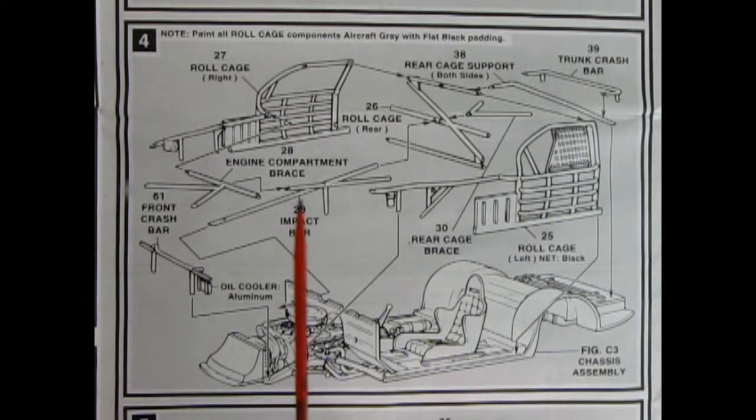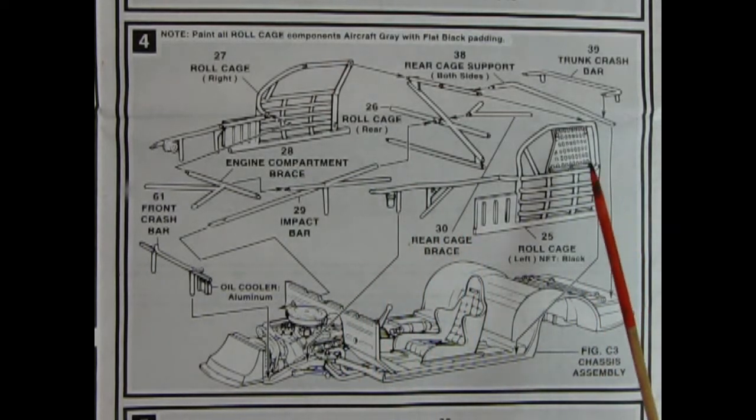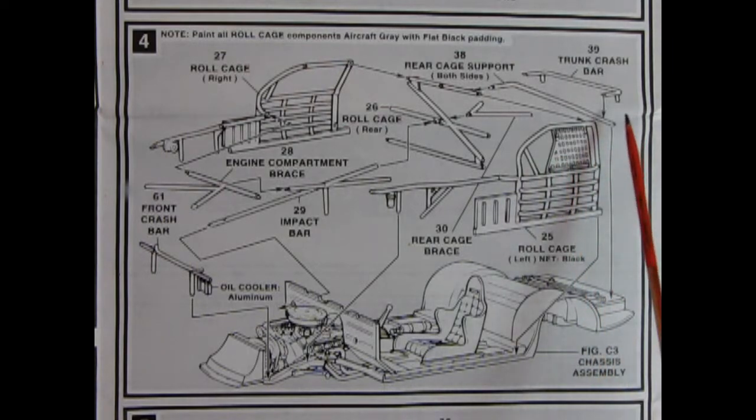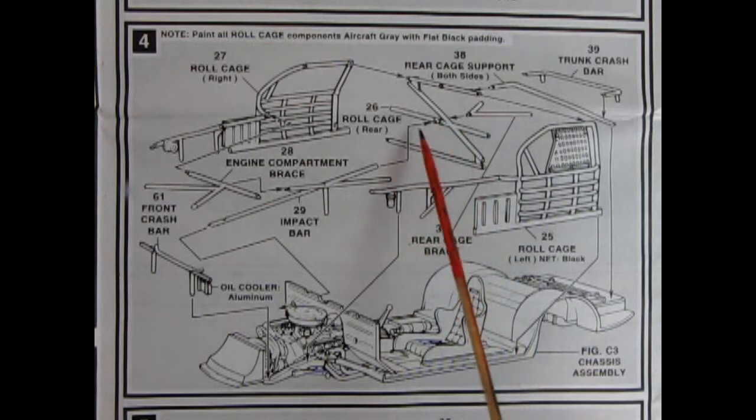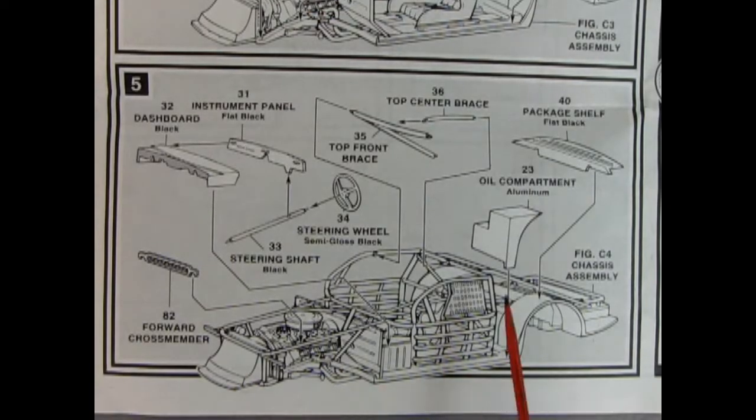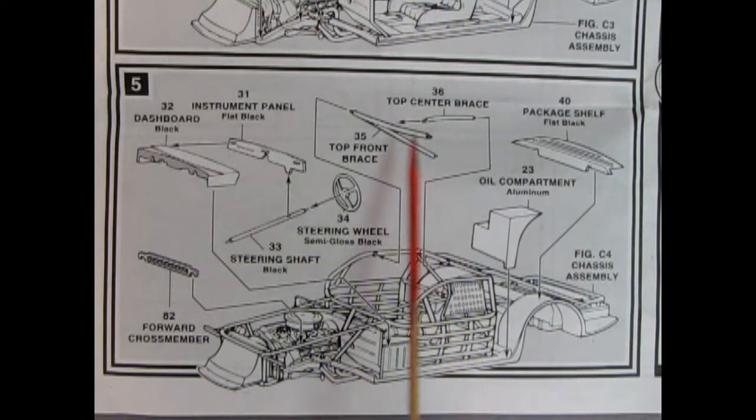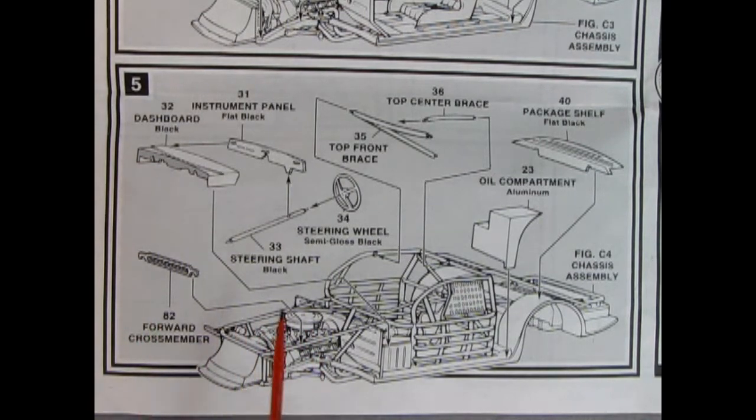In panel four, we see our roll cage going together. There's so many bars in here, it'll keep a good dog inside. Keep them from falling out. We also have our racer's net on the one side, trunk crash bar, rear cage support, and then a little brace up here, center brace, the left and right-hand side, the braces over the engine, and up in front. A lot of braces. Now here we add in our oil compartment and our package shelf, top center brace, and the top front brace. Our steering wheel goes on our steering column, which all hooks up into our two-piece dashboard and instrument panel. And then there's a forward crossmember. This is really very much like the Pontiac NASCAR we reviewed a long time ago.